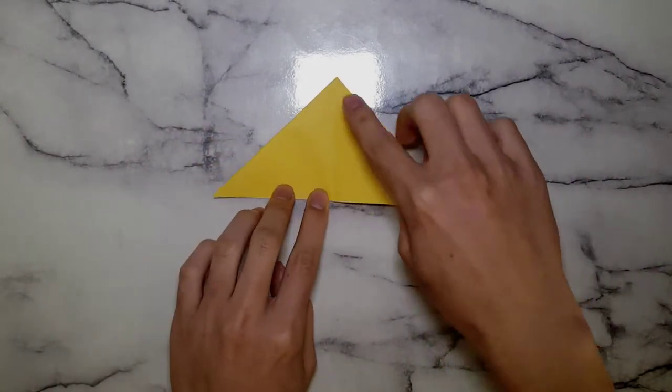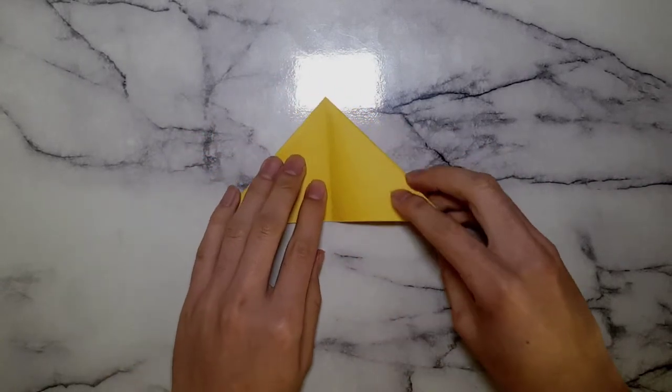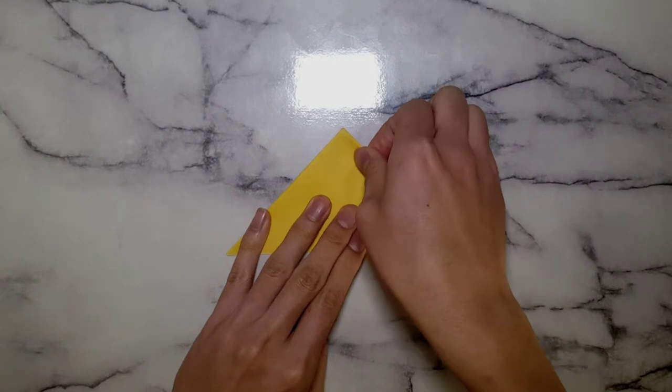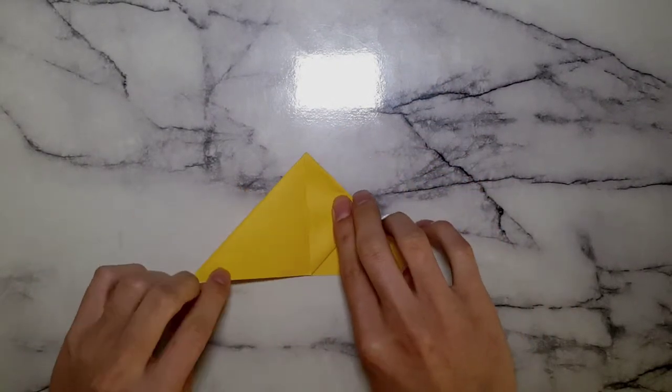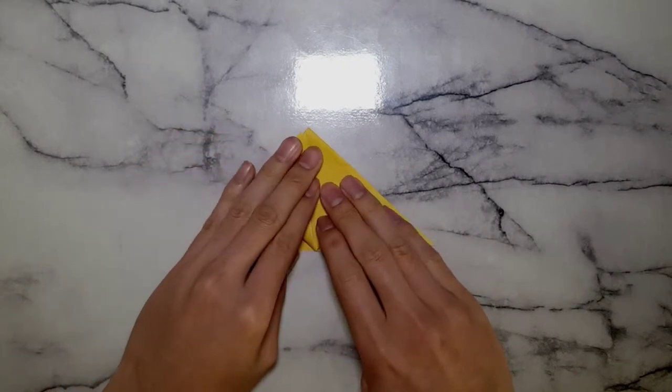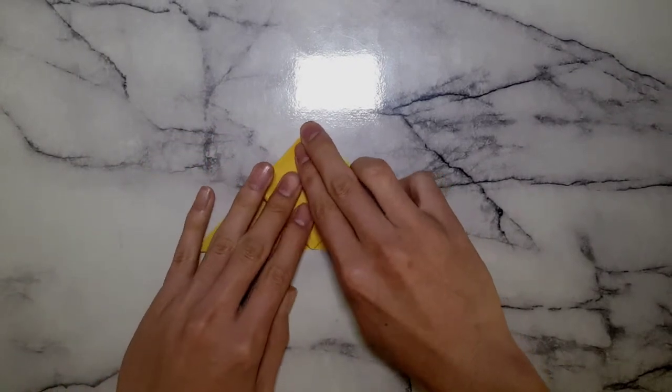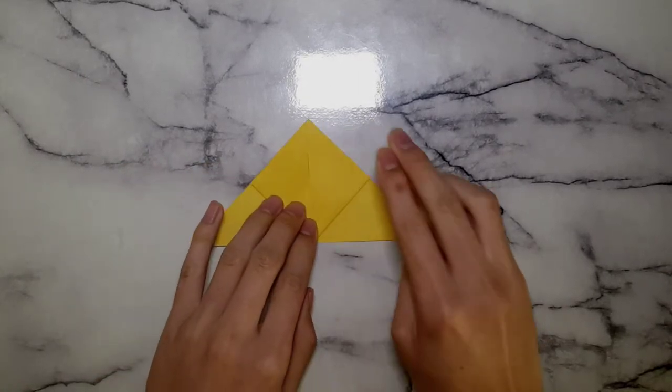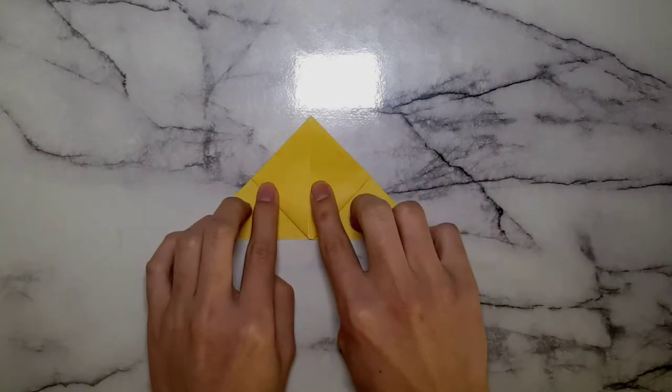Now that we've done that, we're going to, from the two corners and the sides, we're going to just bring it up and meet the top corner. And just creasing it.